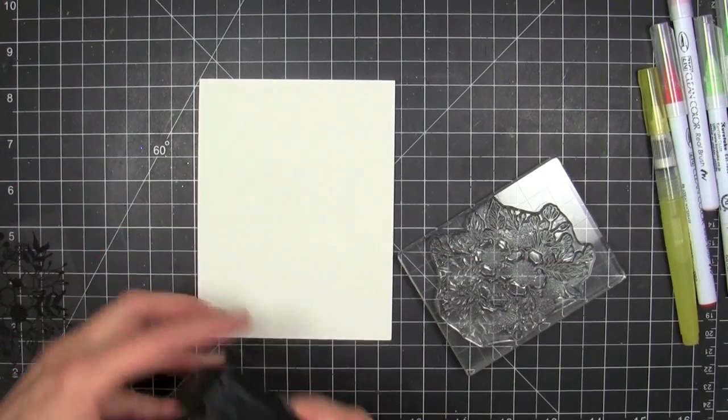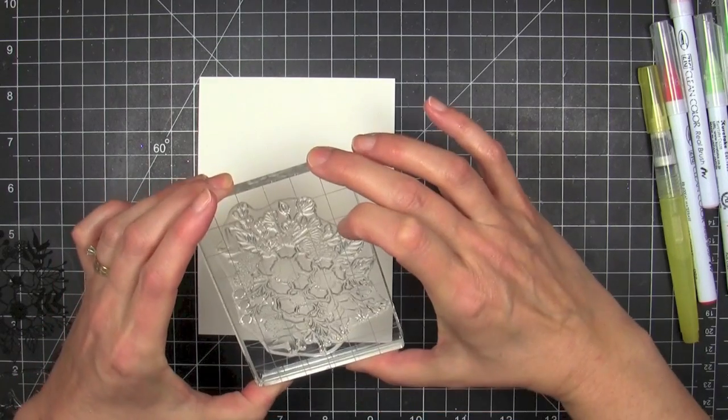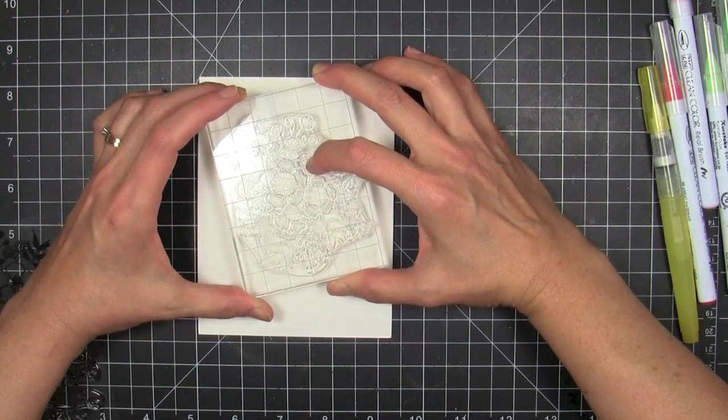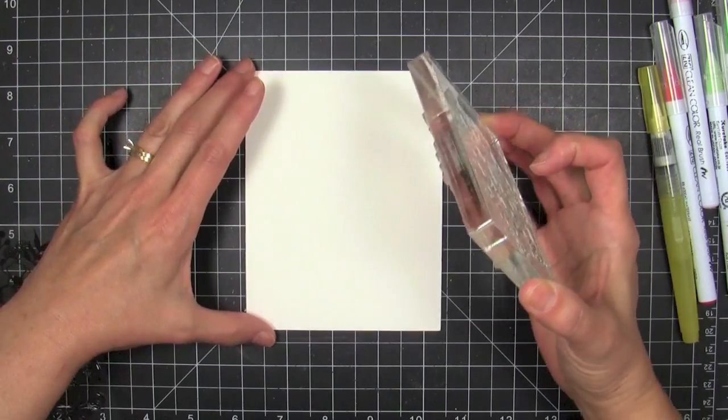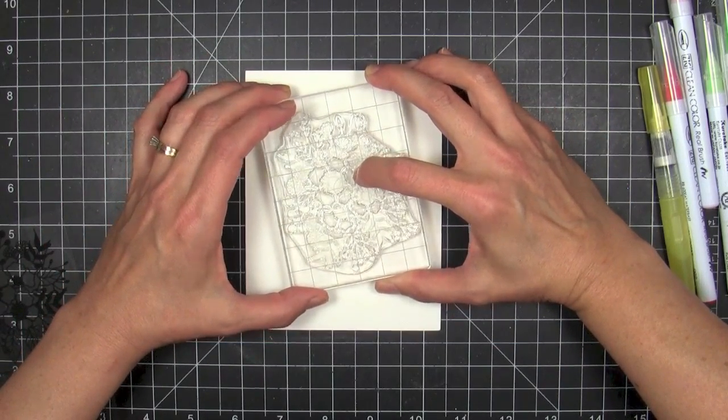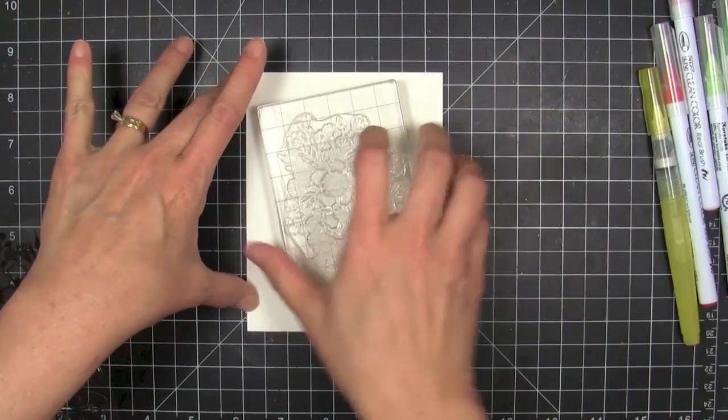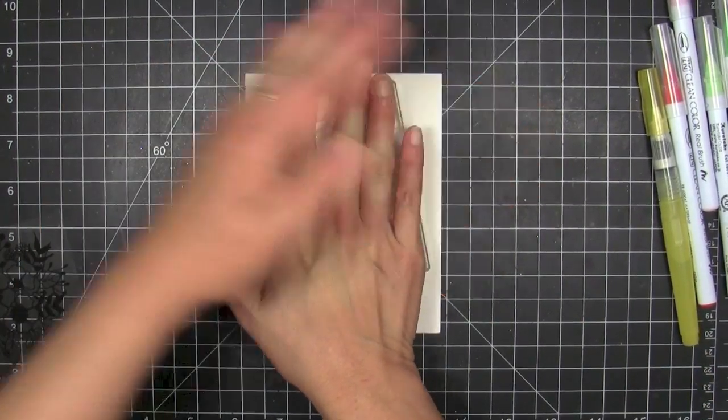And then when I ink up my image and stamp it onto the paper the embossing powder is only going to stick to where the Versamark is and not anywhere where there's any other moisture because the anti-static pouch is going to eliminate that. If I have any oil on my fingertips it's gonna eliminate any of that stickiness that might come from your skin oils and get the embossing powder where you don't want it.